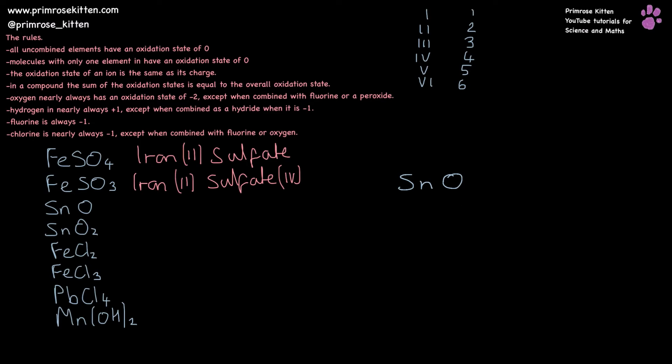Tin oxide now. Now we know oxygen majority of the time is minus two, giving us tin as plus two, making this compound tin(II) oxide.